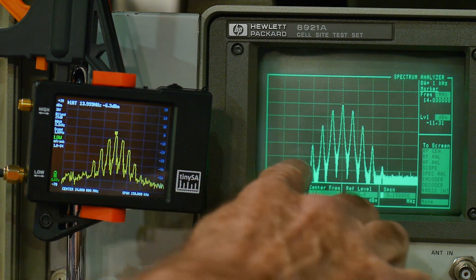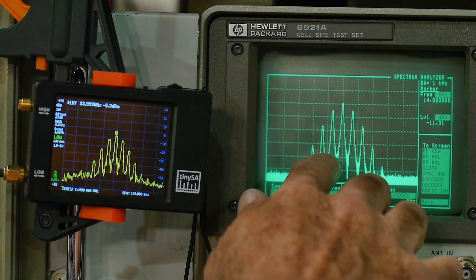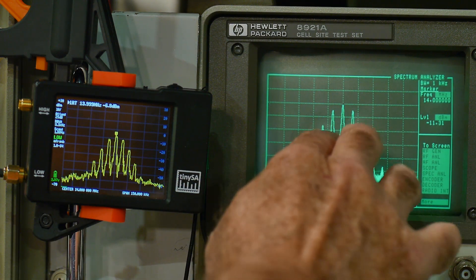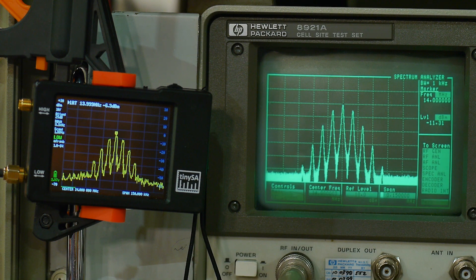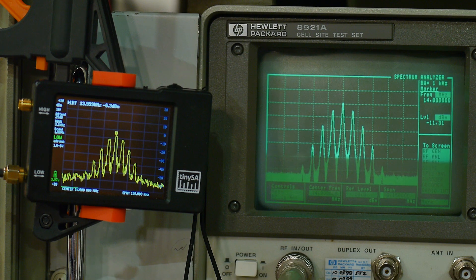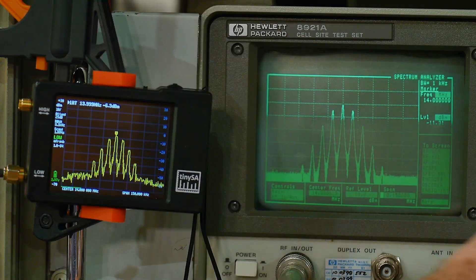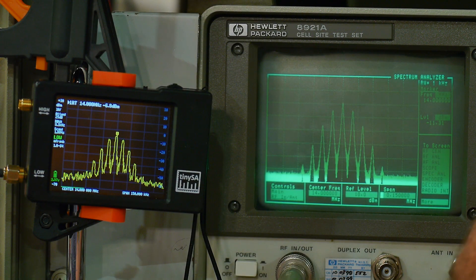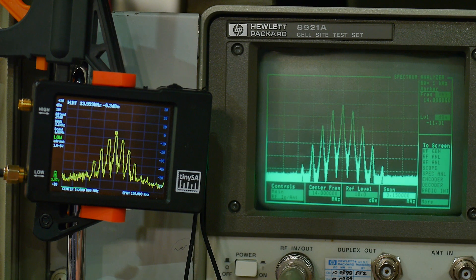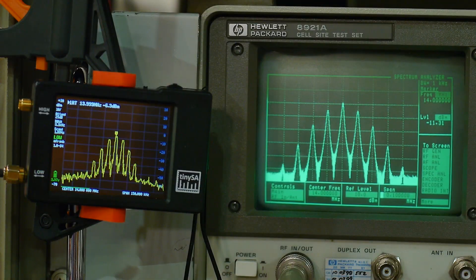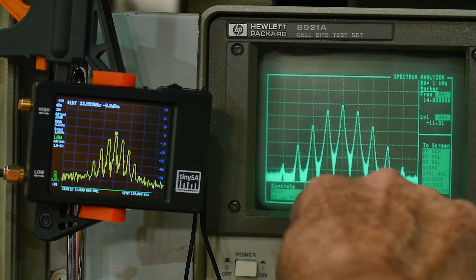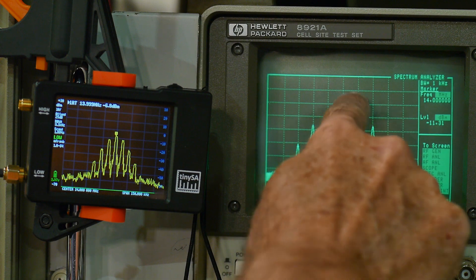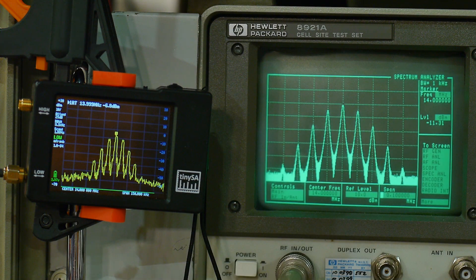So in FM modulation, we get a carrier plus a bunch of sidebands. So I'm modulating with a 10 kilohertz signal. And so let's change the resolution and bandwidth here. Not the span. Let's change the span. Yeah, there we go. So we're spanning 100 kilohertz. So every vertical line is 10 kilohertz.